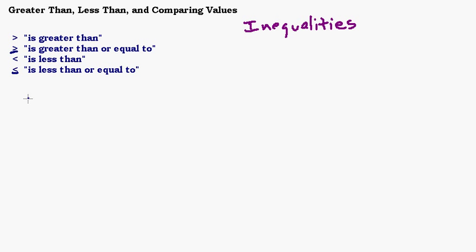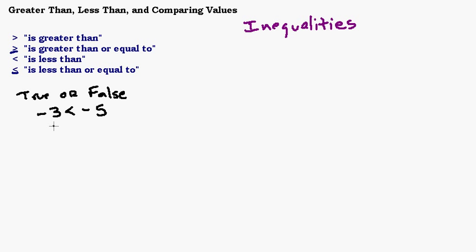One of the questions I usually get when I teach this is: what do you mean 'less than or equal to' — how could it be both? Well, sometimes this comes up when we're trying to determine whether a statement is true or false. True or false: negative 3 is less than negative 5. Notice I read 'is less than' when I put that symbol in. Negative 3 is less than negative 5 — that is false.